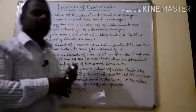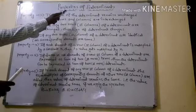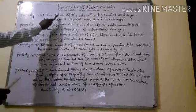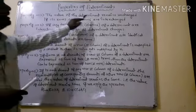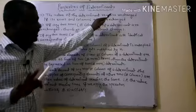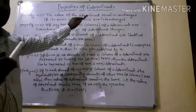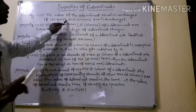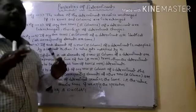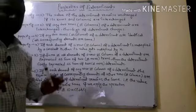Property number one: the value of the determinant remains unchanged if its rows and columns are interchanged. That is the first property finished.